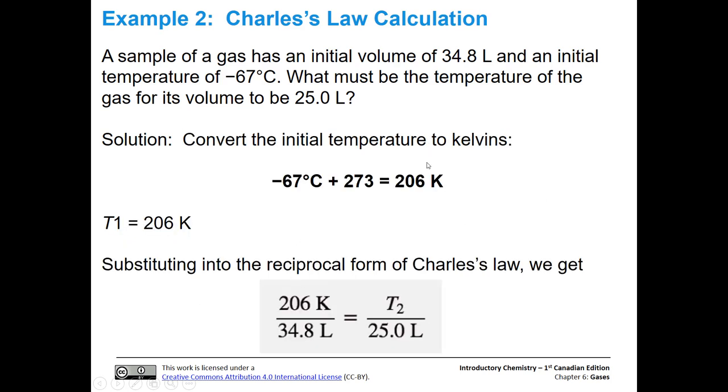The next thing that we need to do is convert that initial temperature to Kelvin. We're going to keep the sign, it's negative 67 degrees C. So that's negative 67 plus 273. And that's going to give us 206 Kelvin. Essentially, we're just subtracting 273 minus 67. So we're going to get T1 equal to 206 Kelvin.